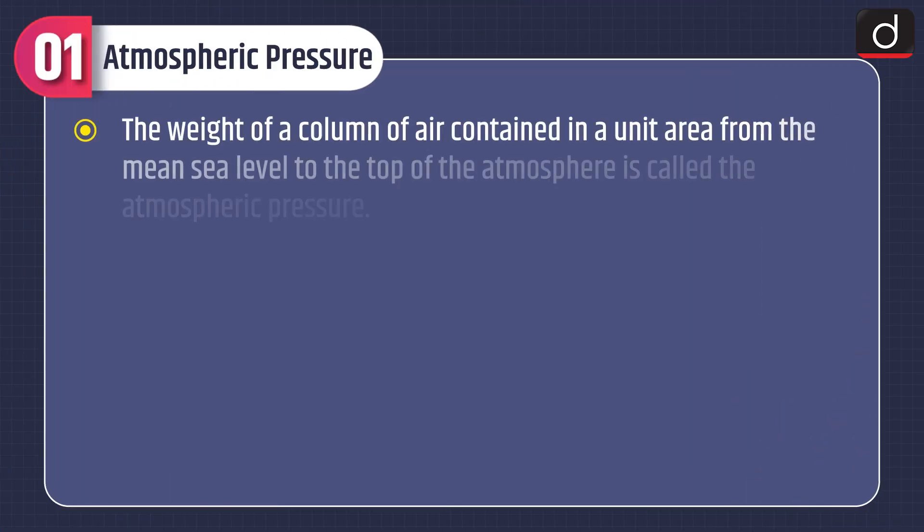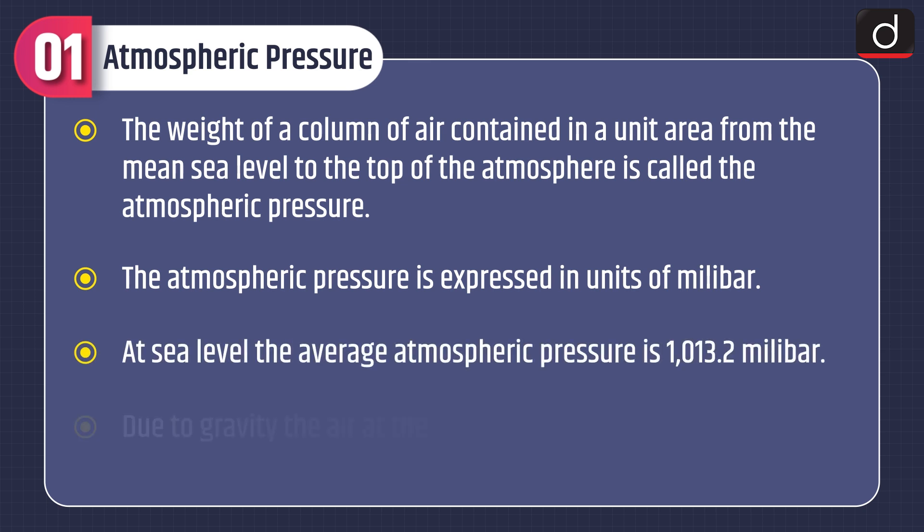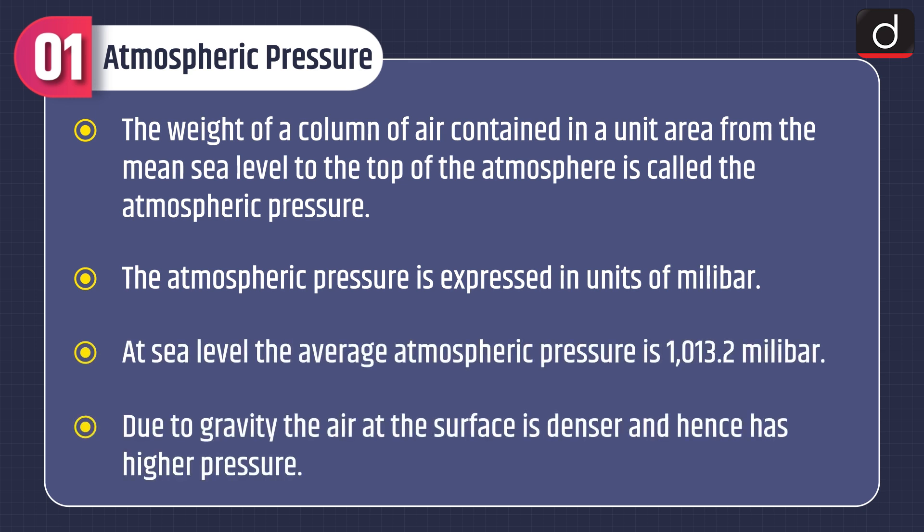Let's discuss about atmospheric pressure. The weight of a column of air contained in a unit area from the mean sea level to the top of the atmosphere is called the atmospheric pressure. The atmospheric pressure is expressed in units of millibar. At sea level, the average atmospheric pressure is 1013.2 millibar.